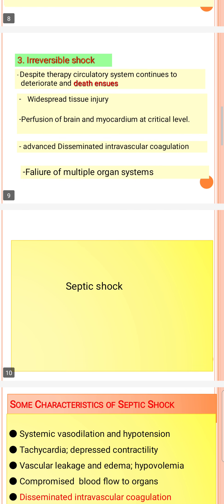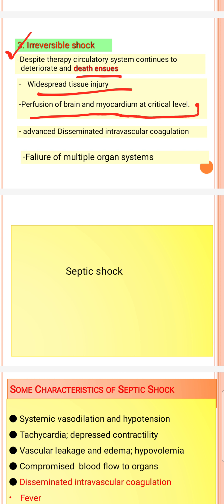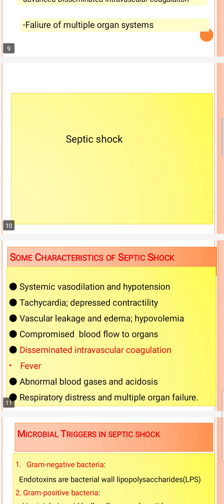Irreversible shock means the circulatory system has deteriorated due to progressive shock. Without therapy, the patient ultimately dies. There is critical tissue injury and hypoperfusion in the brain and myocardium, advanced disseminated intravascular coagulation, and multiple organ system failure.